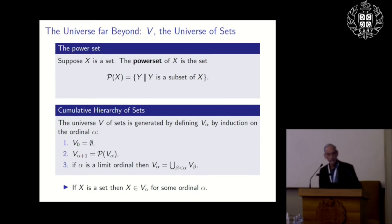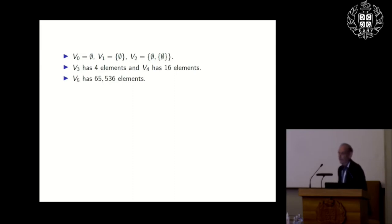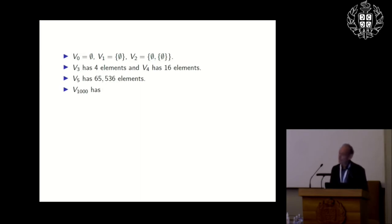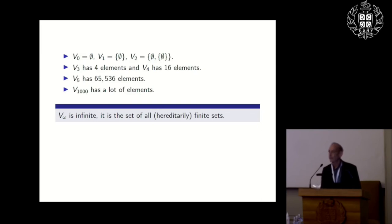The empty set, V-zero, is not too difficult to understand. V-one has just the empty set, V-two has one element, V-three has four elements, V-four has sixteen, V-five has 65,536 elements — maybe not so manageable. V-sub-1000 has a number we can't write down. V-omega is infinite — it's the set of all hereditarily finite sets, really the same as number theory. What takes one from number theory to the infinite is the power set axiom and the existence of V-omega.